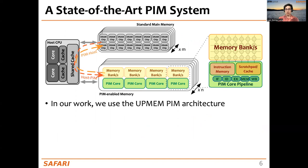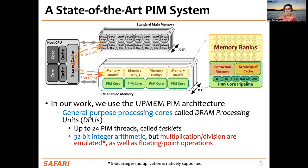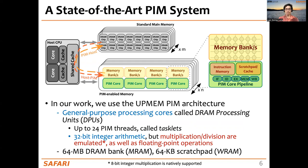In our work, we use the UPMEM PIM architecture, which uses general-purpose processing cores called DRAM Processing Units or DPUs. Each DPU is fine-grained multithreaded and can run up to 24 PIM threads. They support 32-bit integer arithmetic, but multiplication and division are emulated, as well as floating-point operations. Each PIM core has access to its own DRAM bank called MRAM and its own scratchpad called WRAM.